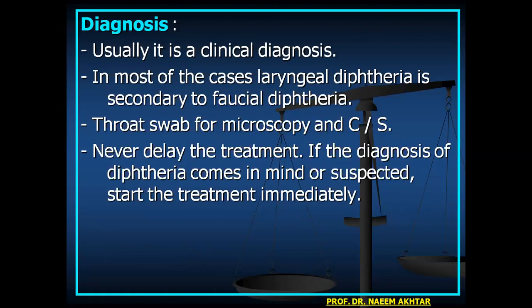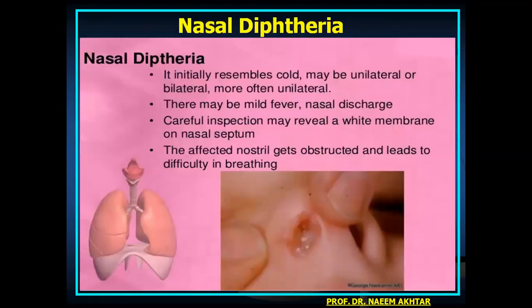Throat swab for microscopy and culture sensitivity should be sent, but never delay treatment — if diphtheria is suspected, start treatment immediately. Nasal diphtheria initially resembles a cold; it may be unilateral or bilateral, but is more often unilateral. There may be mild fever and nasal discharge. Careful inspection may reveal a white membrane on the nasal septum, causing obstruction and difficulty breathing.